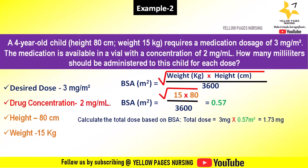Next, we calculate the total dose based on body surface area. Total dose equals 3 milligrams multiplied by 0.57 meter squared, which gives the answer 1.73 milligrams.